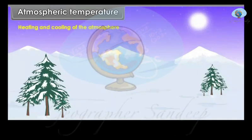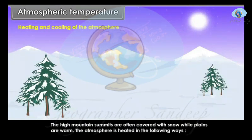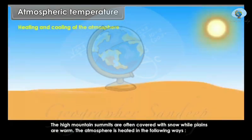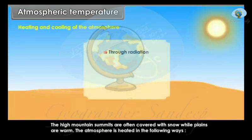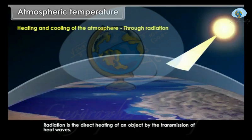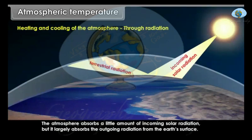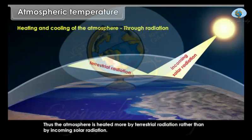Heating and Cooling of the Atmosphere. The sun is the only source of atmospheric heat, but it hardly affects the atmosphere directly. High mountain summits are often covered with snow while plains are warm. The atmosphere is heated in the following ways: through radiation, conduction, convection, and advection. Radiation is the direct heating of an object by the transmission of heat waves. The atmosphere absorbs a little amount of incoming solar radiation, but largely absorbs the outgoing radiation from the earth's surface. Thus, the atmosphere is heated more by terrestrial radiation rather than by incoming solar radiation.